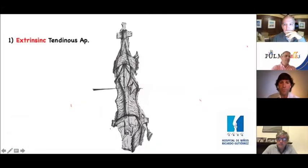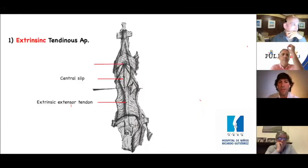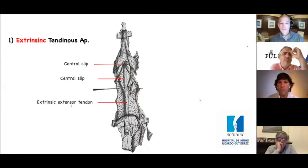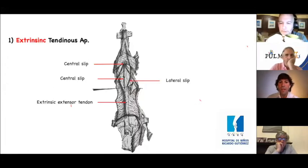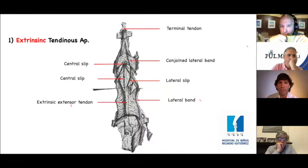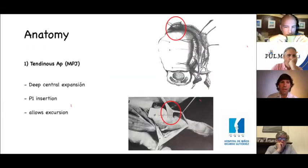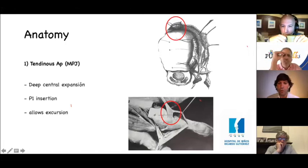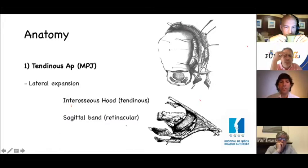The tendinous apparatus, as we said, can be divided into extrinsic and intrinsic. The extrinsic extensor tendon has the central slip and the insertion at the base of P2 that will be affected in boutonniere's deformity. The lateral slip from the extrinsic extensor mechanism will join the lateral band of the intrinsic mechanism to form the conjoined lateral band and form the terminal tendon.